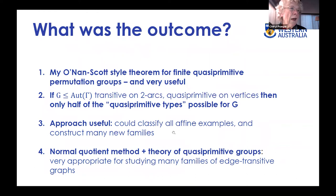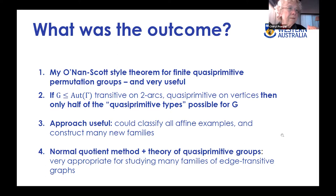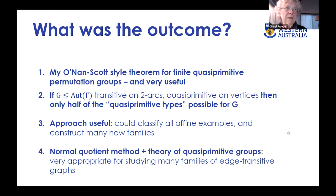The result was useful: Sasha Ivanov and I were able to classify all quasi-primitive affine examples, and the normal quotient method has become a standard approach for analyzing families of edge-transitive graphs. Though at the beginning I felt somewhat disappointed that my method wasn't getting me close enough to use the finite simple group classification directly.